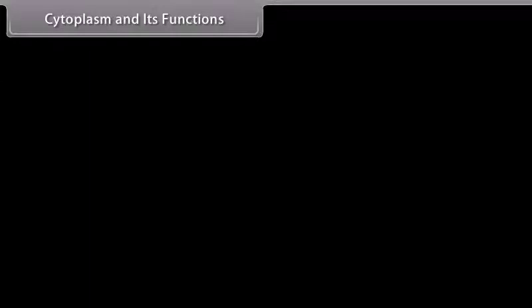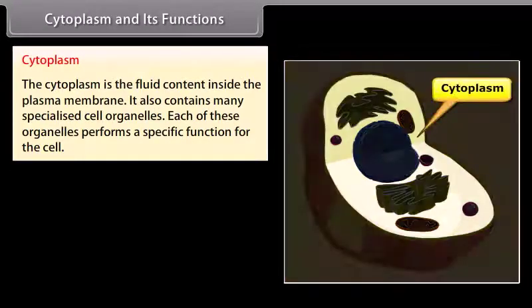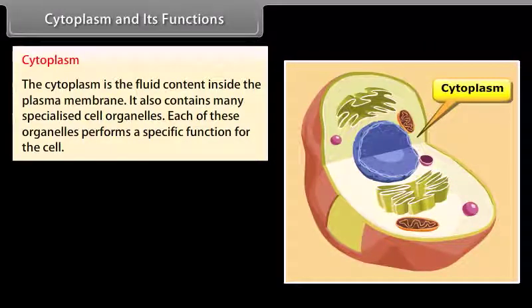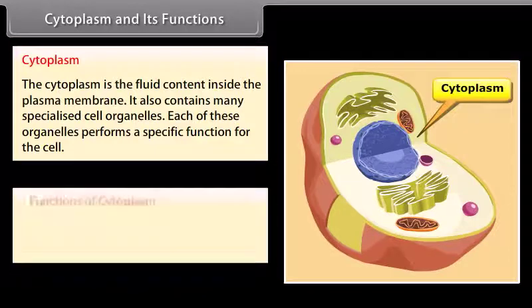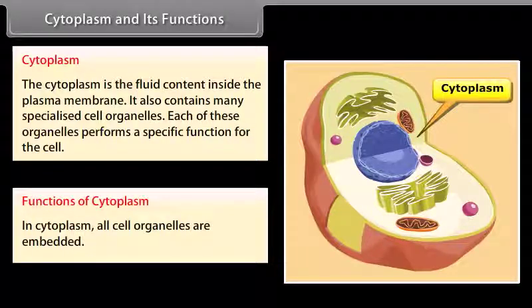The cytoplasm is the fluid content inside the plasma membrane. It also contains many specialized cell organelles, each of which performs a specific function for the cell. In the cytoplasm, all cell organelles are embedded.